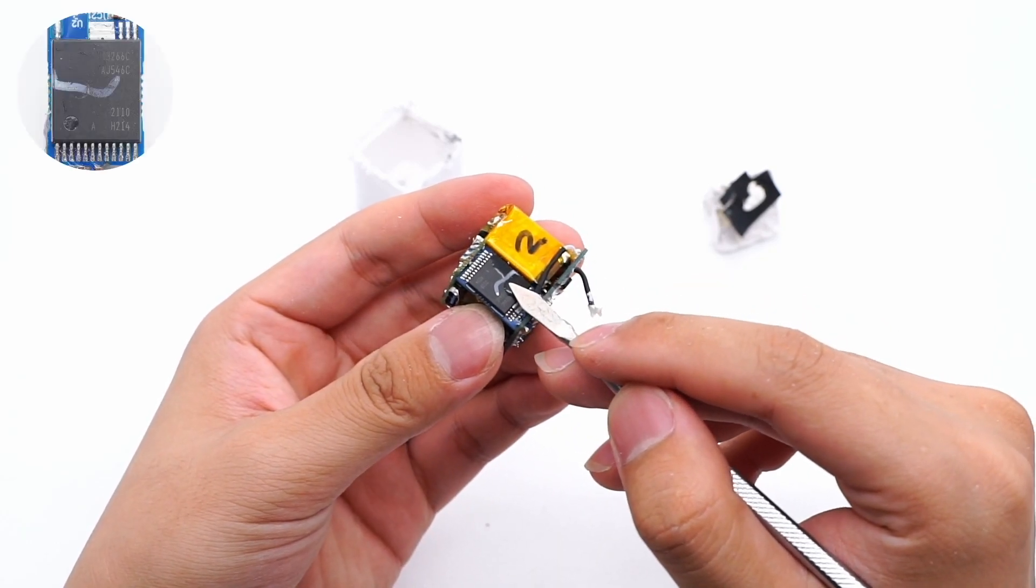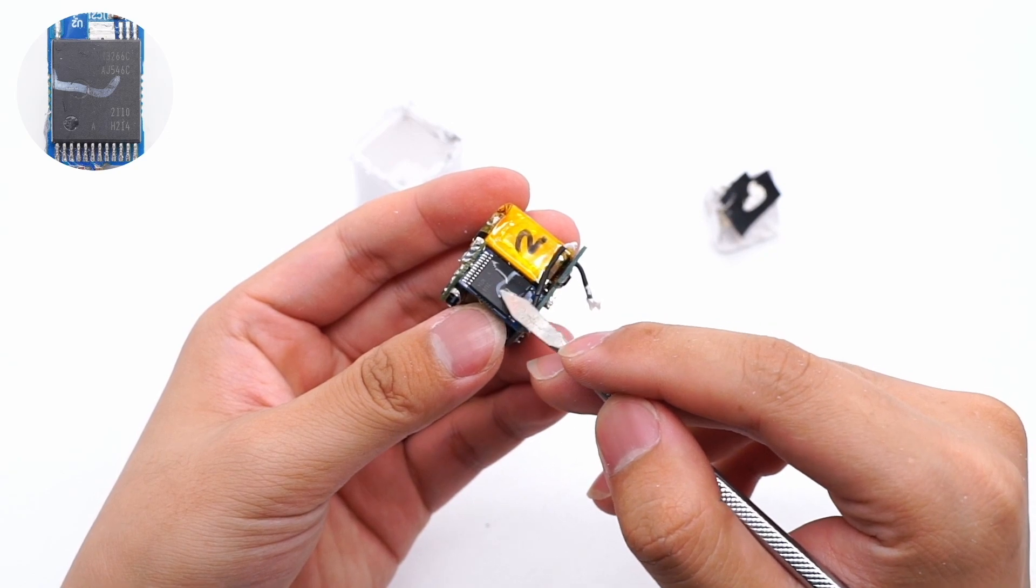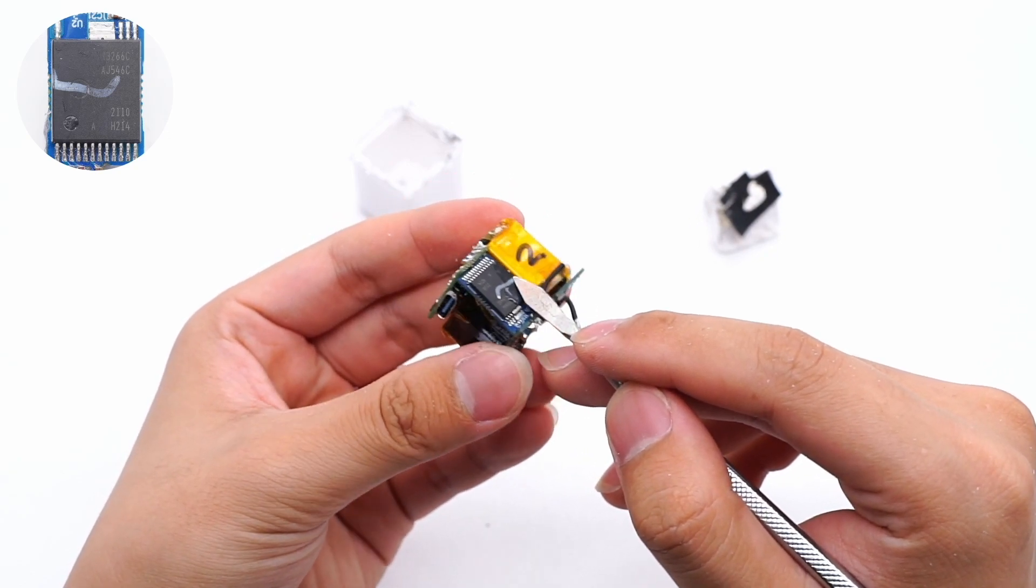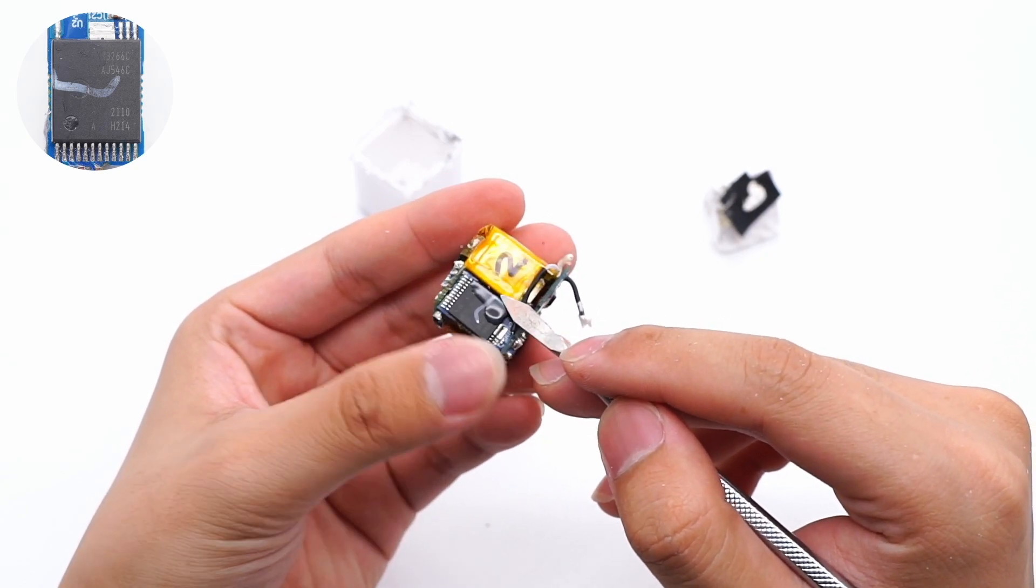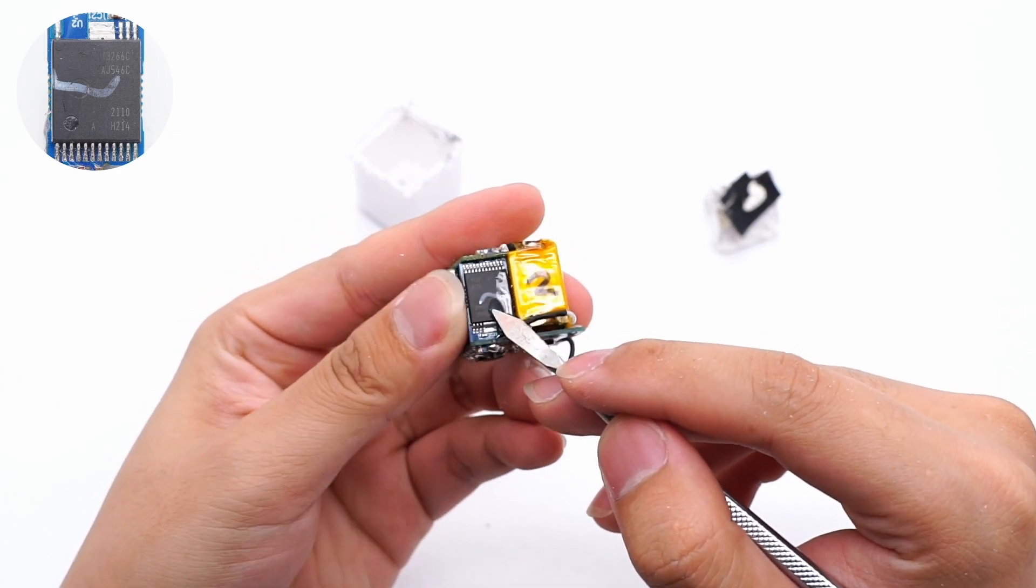This is a switching power supply of master control chip. Model is PI INN3266C. It integrates controller, switch MOSFET, secondary synchronous rectifier controller, and belongs to the InnoSwitch 3CP series.